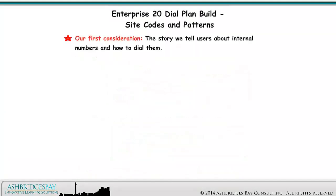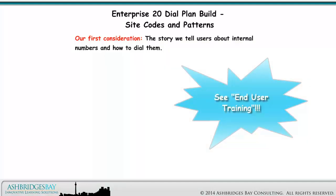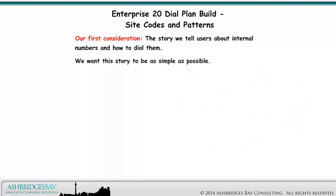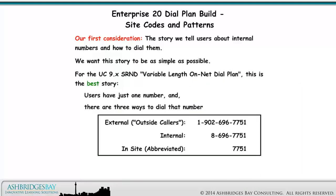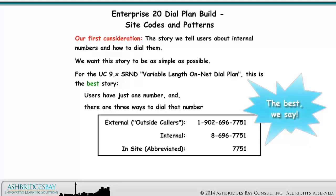Our first consideration is the story we tell users about internal numbers and how to dial them. See our drawing and user training. We want this story to be as simple as possible. For the UC 9.x SRND variable length on-net dial plan, this is the best story: users have just one number, and there are three ways to dial that number.